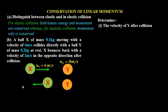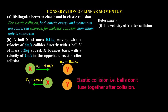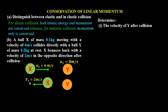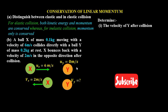After collision, ball X moves in the opposite direction — we are told it bounces back at 2 meters per second. This is the velocity of X after collision, Vx. The question requires us to find the velocity of Y after impact, so we are going to use the principle of conservation of linear momentum.